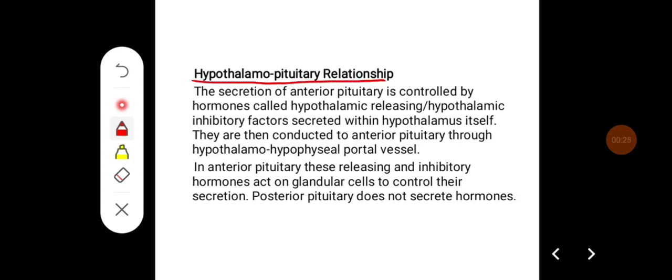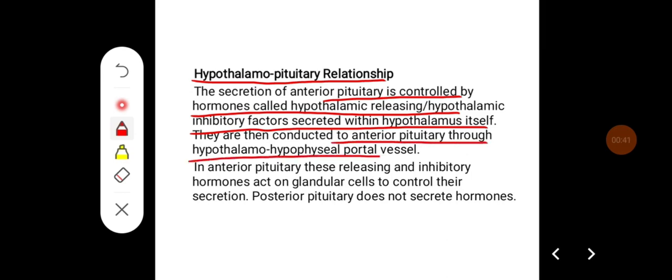Hypothalamo-pituitary relationship. The secretion of anterior pituitary is controlled by hormones called hypothalamic releasing or hypothalamic inhibitory factors secreted within the hypothalamus itself. They are then conducted to the anterior pituitary through the hypothalamo-hypophysial portal vessel.